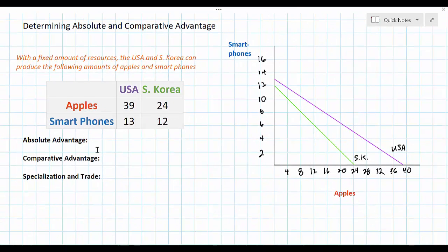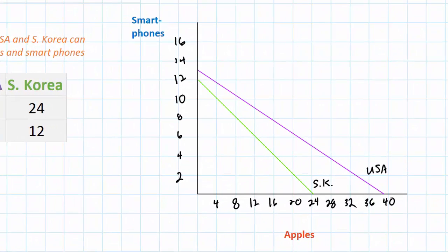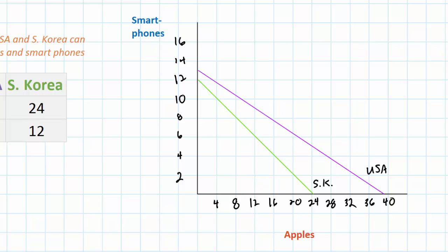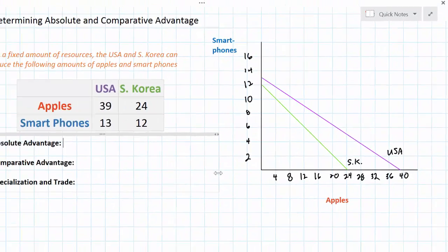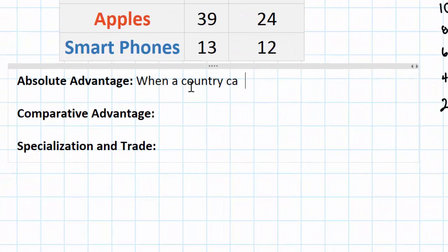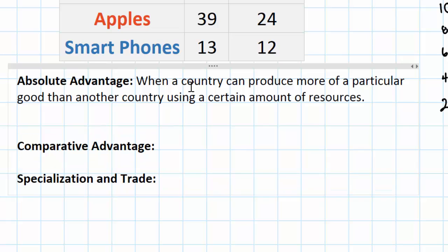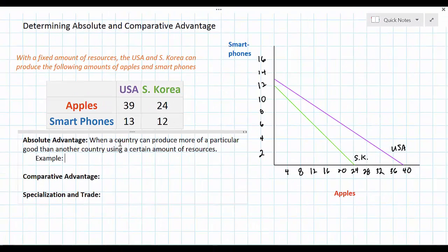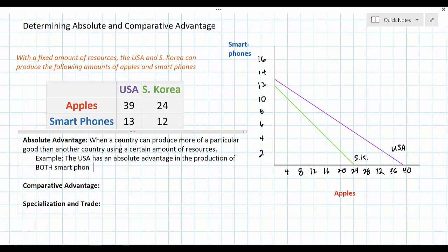We've also plotted the production possibilities of USA and South Korea in a production possibilities curve diagram. The purple line represents the production possibilities of the United States and the green line represents South Korea. The first concept we need to introduce is that of absolute advantage. An absolute advantage exists when a particular country can produce more of a good than another country using a certain amount of resources. In our example, the United States can produce more apples and more smartphones than South Korea, so the United States has an absolute advantage in the production of both.